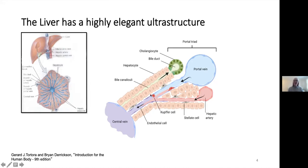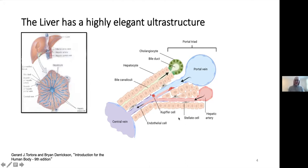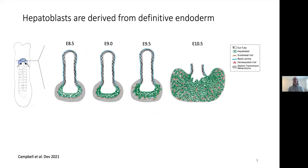Some other cells of interest are the Kupffer cells — resident macrophages — and the stellate cells. These stellate cells are resident fibroblast cells found in the liver thought to be involved in things like regeneration and repair. It's quite an interesting ultrastructure, but despite that, we know very little about how it actually forms.